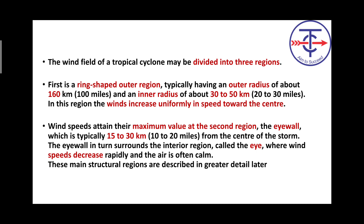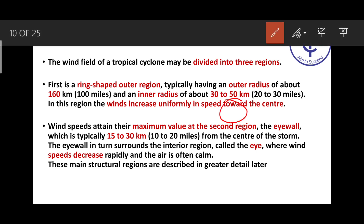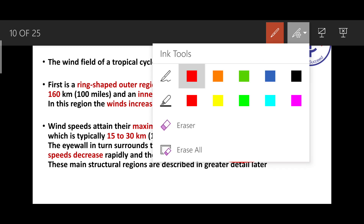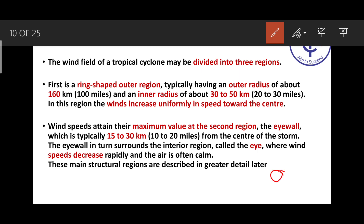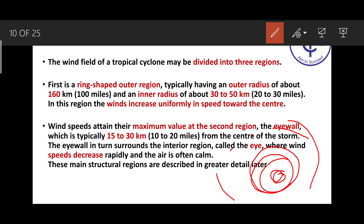Now, we divide the cyclone into basically 3 areas. First is the inner circle — the innermost ring. Clear. The outer radius is about 160 km. In this outer region, wind speeds increase uniformly towards the center. Wind speed uniformly increases inward and attains maximum value at the second region — the eye wall. Very important. At the center is the 'eye' of the cyclone, and surrounding it where the wind moves is called the eye wall.